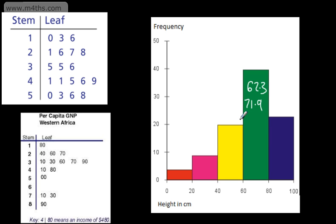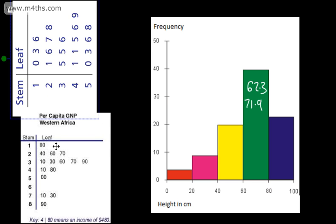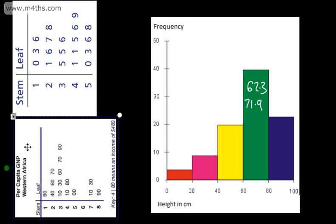With a stem and leaf diagram, we keep the shape of the distribution and we also keep the value of each individual item of the data set. We have two stem and leaf diagrams here. If we spin these round, we could look at them as histograms. The advantage for small amounts of values is that we retain the value of each of the observations.